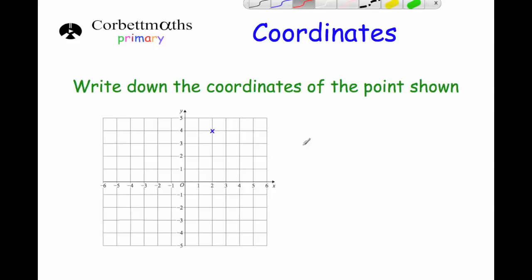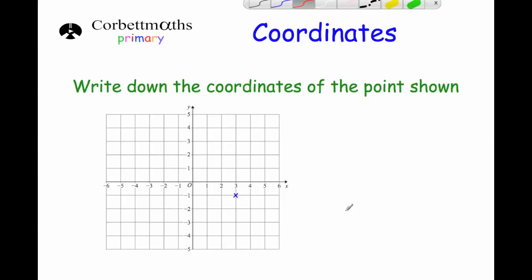Now we've been asked to write down the coordinates for points shown. This point here: from the origin it's two to the right and four up, so that's the point (2, 4). The next point: from the origin it's three to the right — so that's 3 — and then one down, so that's minus 1. That gives the point (3, -1).